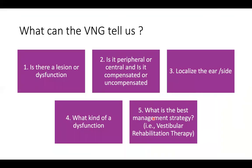What can the VNG provide us? First of all, it tells us if there is a lesion or dysfunction. It also provides information about whether the problem is central or peripheral, the site of lesion, what kind of dysfunction we have, and if it's compensated or not. And finally, what is the best way to manage what we found — for example, if we do positioning and find a possibility of BPPV, then we know the Epley Maneuver is the best step to follow.